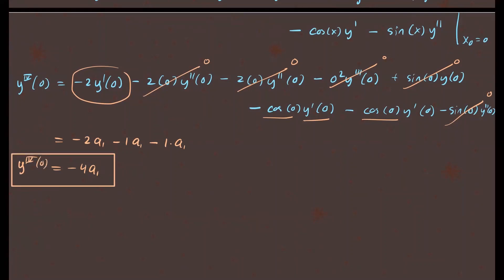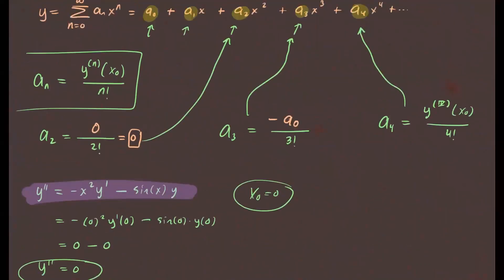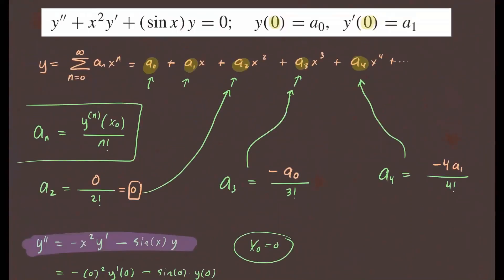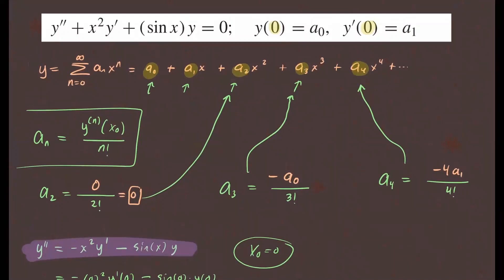Substituting back: a₄ equals negative 4a₁ over 4 factorial. Now let's assemble the full solution by replacing all coefficients. a₀ and a₁ stay as given. a₂ is replaced by 0 (disappears). a₃ becomes negative a₀ over 3 factorial, and a₄ becomes negative 4a₁ over 4 factorial. That's how the solution looks.